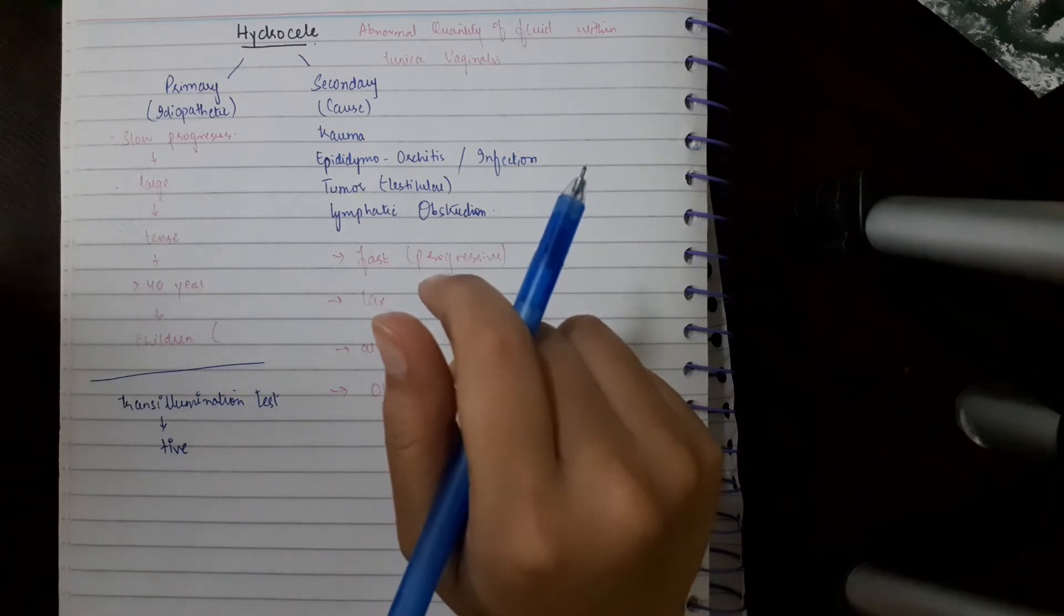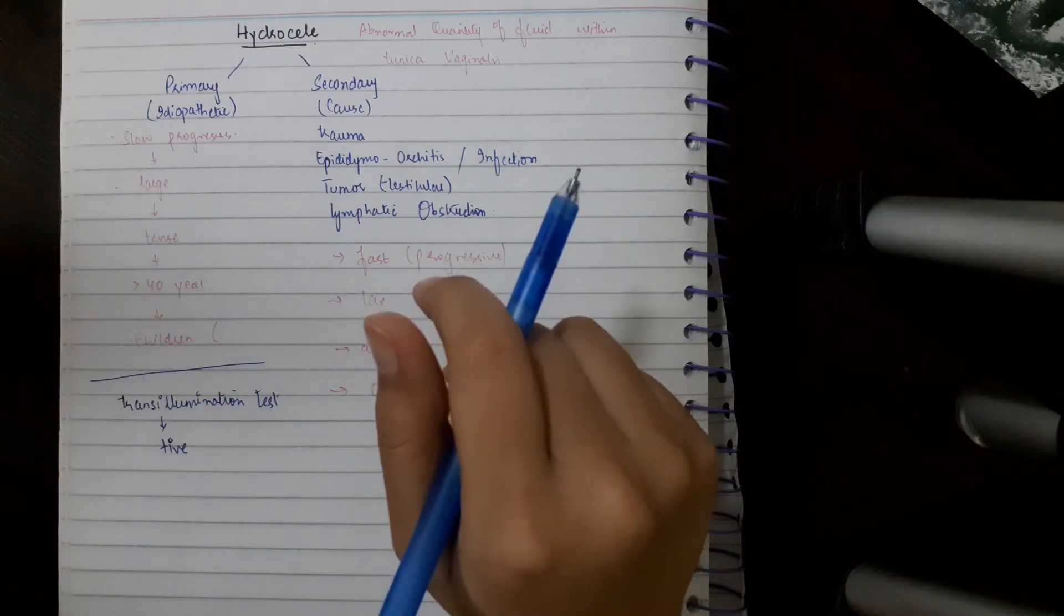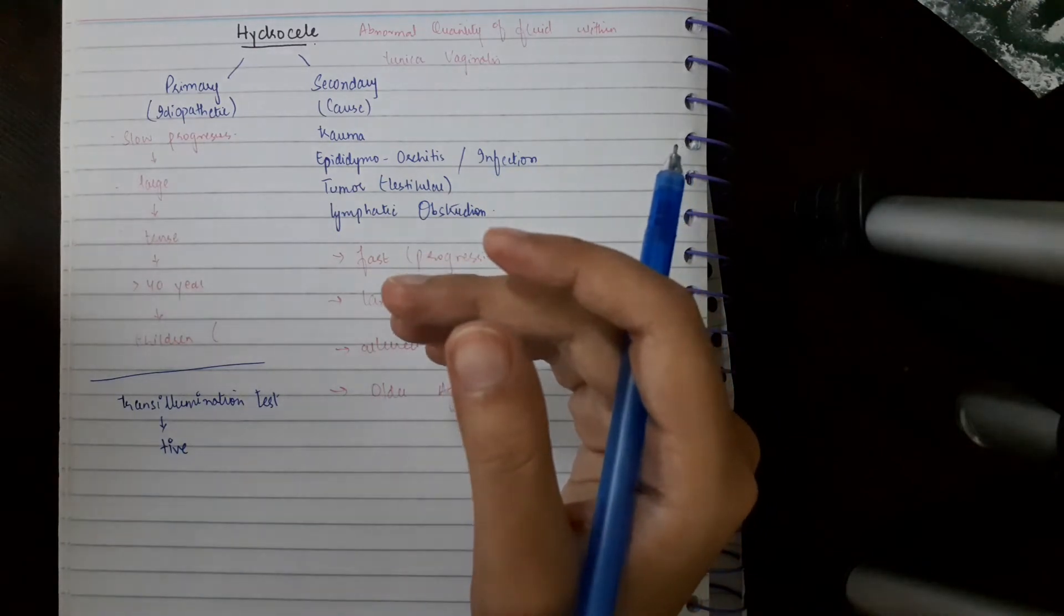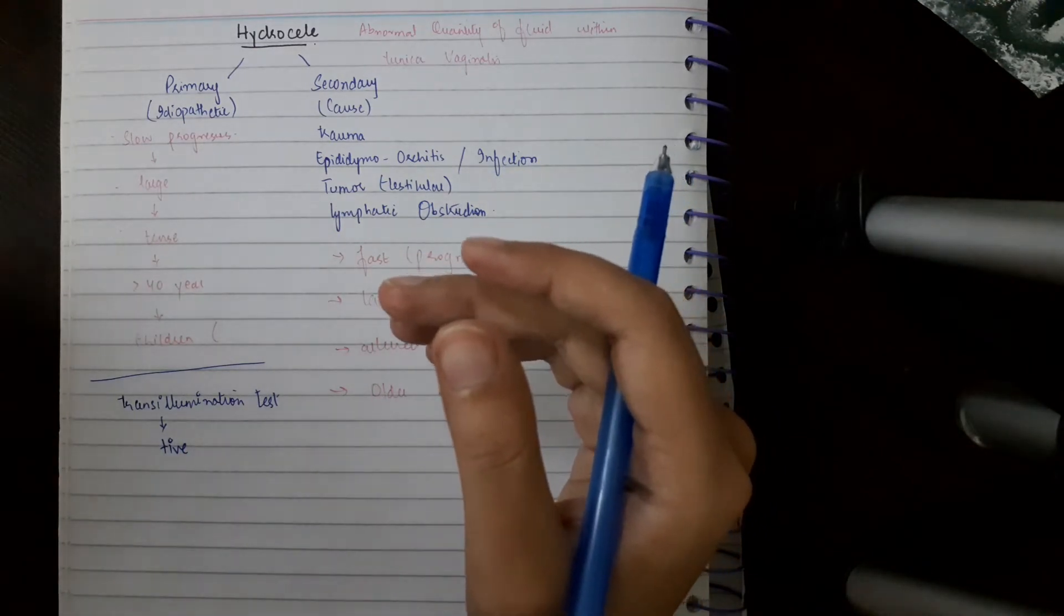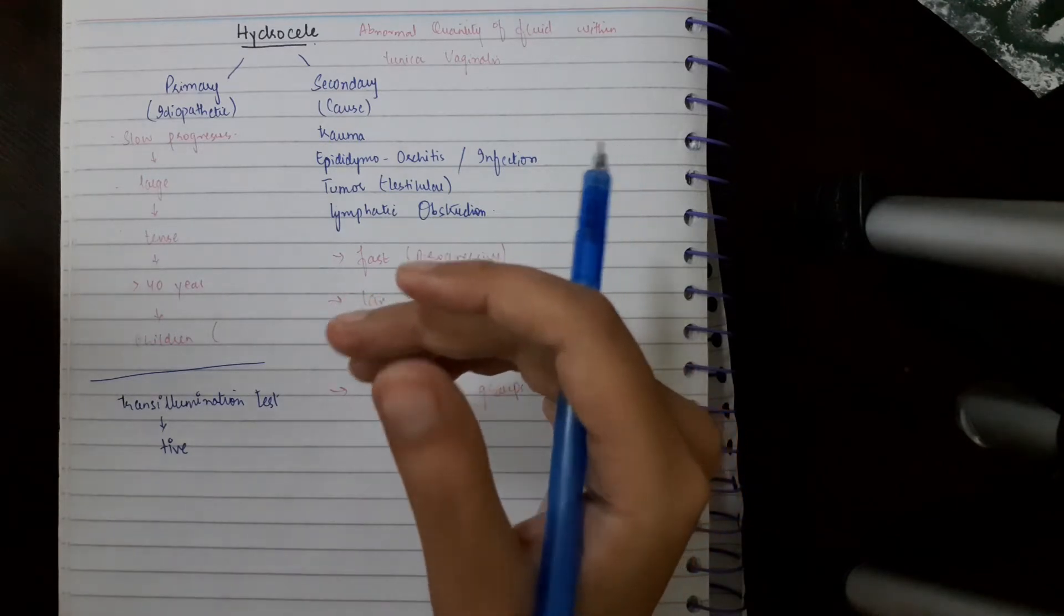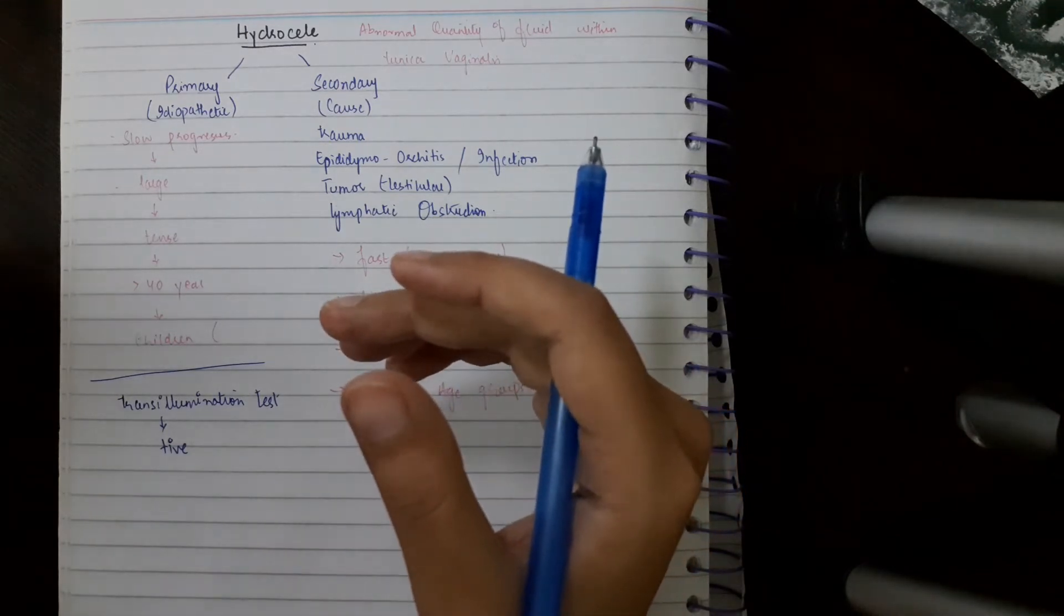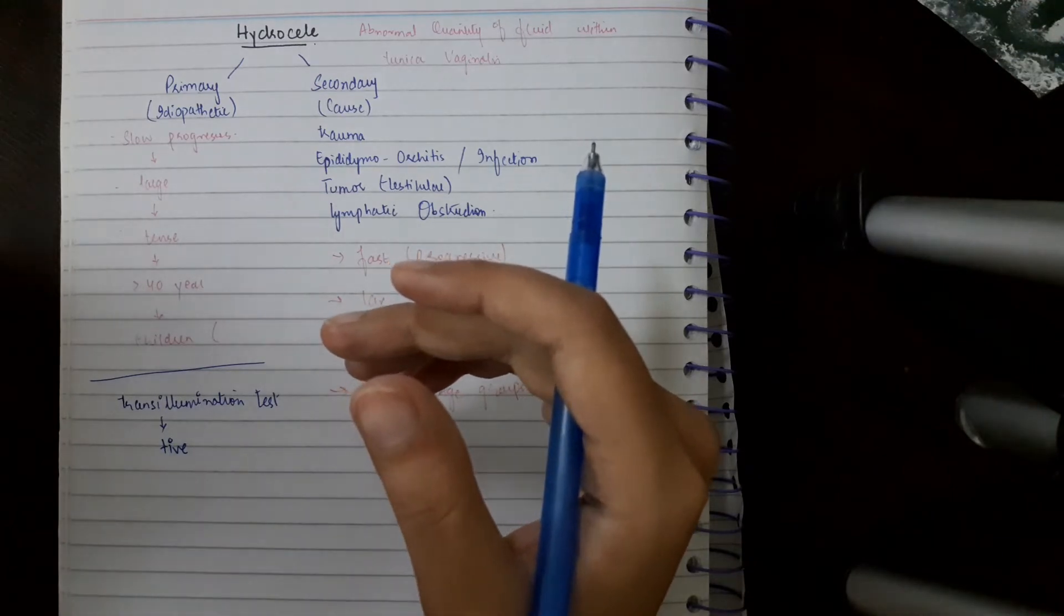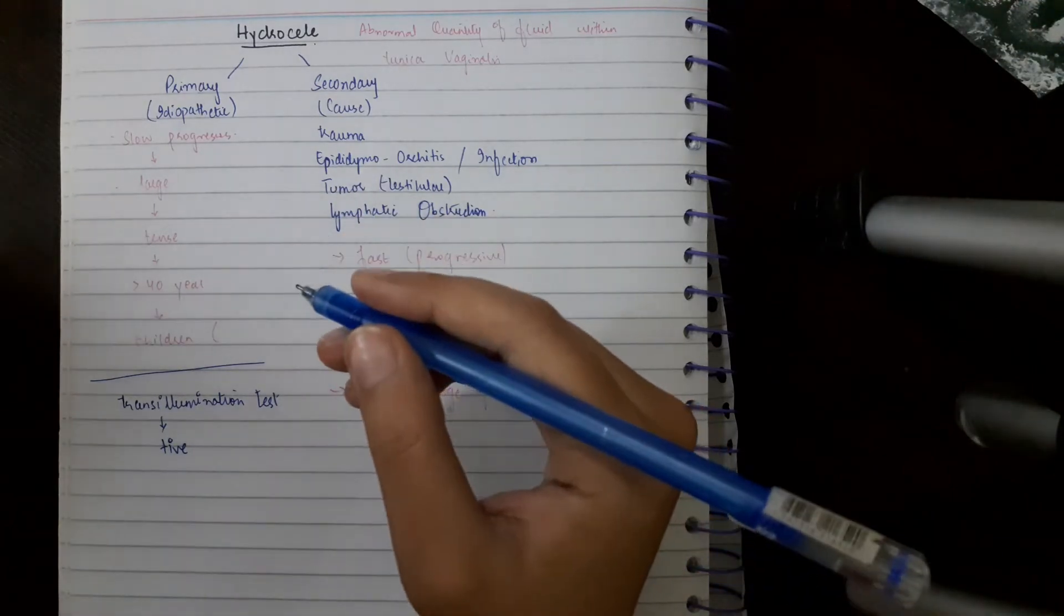This means that whenever you put a light on the hydrocele or scrotal swelling, you see that there is transillumination. That means you can see the light passing through and no opacity is present. This is also helpful.